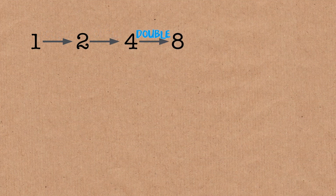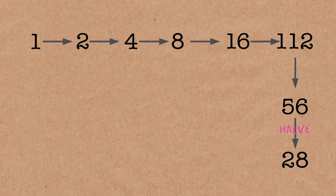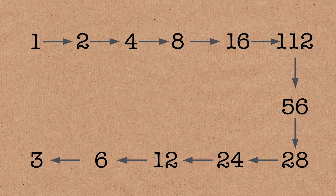This is the crucial step — we double that 6 and we get 112. From 112, we can divide by 2 and go to 56. From 56, divide by 2 and go to 28. From 28, we can divide that 8 by 2 and go to 24. Then bingo — 12, 6, 3. 3 is hard to get to from 1, but you can do it. And it took 11 steps to go from 1 to 3.